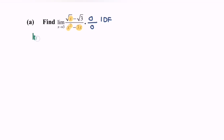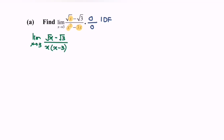So, limit when x approaching 3, for the function square root of x minus square root of 3 over x squared minus 3x. We can factor the denominator as x, and multiply the numerator by the conjugate — square root of x minus square root of 3.